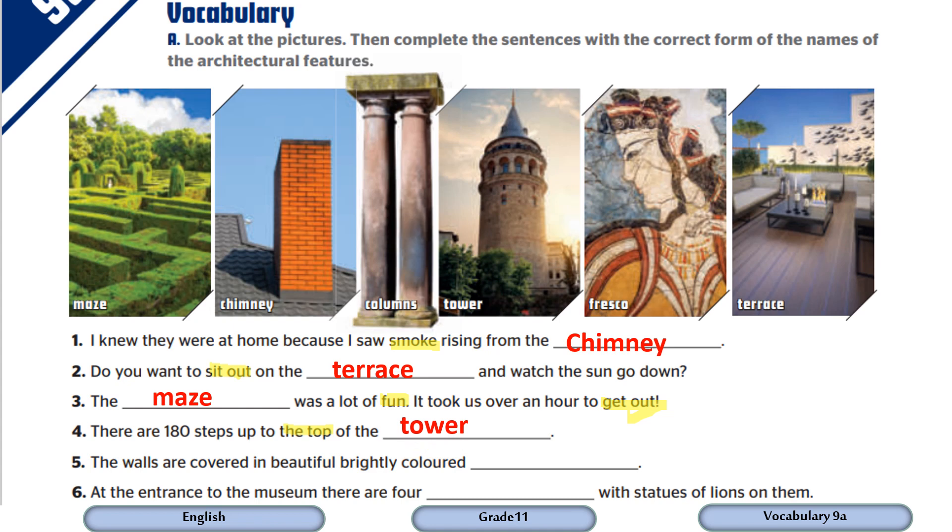The walls are covered in beautiful, brightly colored. So beautiful, brightly colored, it can describe the picture number five, which is fresco. At the entrance to the museum, there are four with statues of lions on them. And of course here we are talking about column.